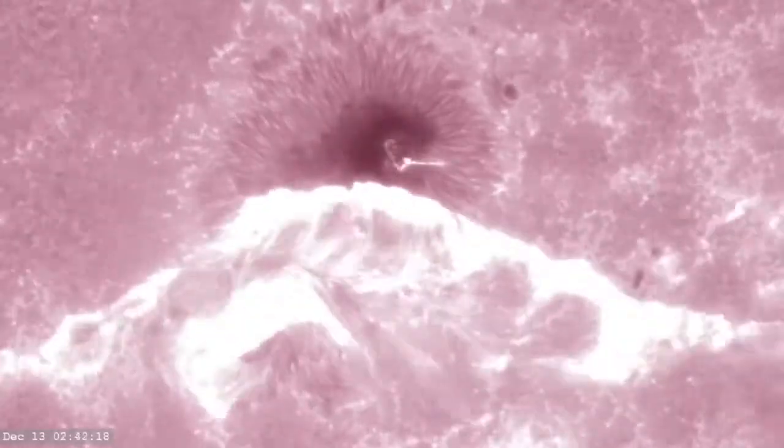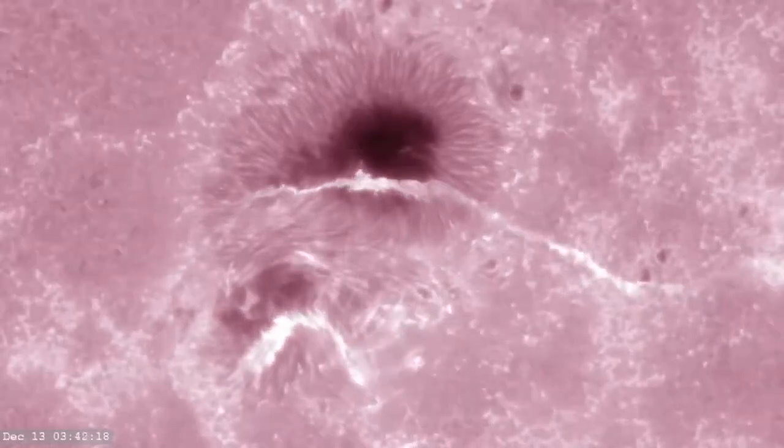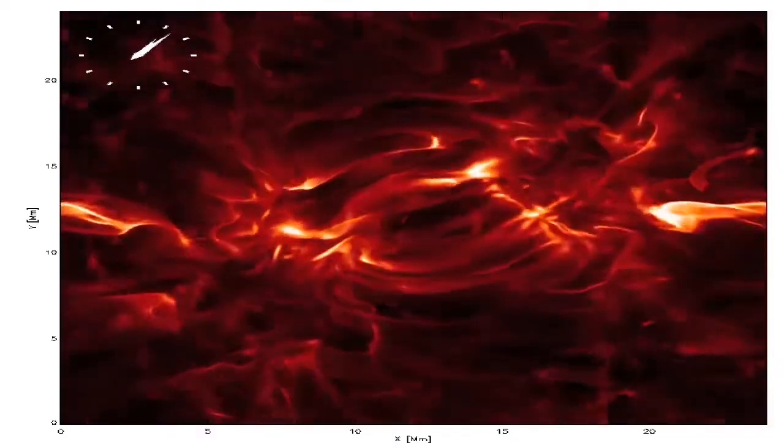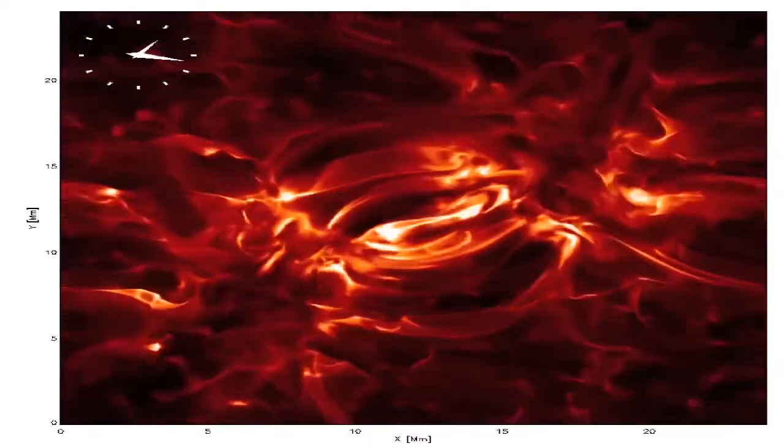The interface region is the greatest source of ultraviolet light that impacts the Earth and the space around it. Only a specifically designed spacecraft can image the wavelengths of light needed to study the chromosphere.